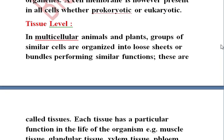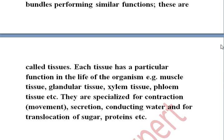The next level is the tissue level. In multicellular animals and plants, a group of similar cells organized into a loose sheet or bundle performing the same function is called tissue. Each tissue has a particular function. For example, muscle tissue, glandular tissue, and xylem tissue each perform a specific function — specialized for contraction, secretion, conduction of water, and translocation of sugar respectively.